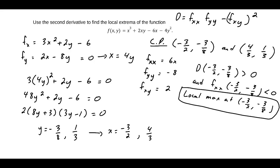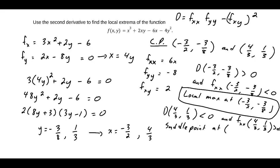And following similar steps, we find that d evaluated at the point 4 thirds comma 1 third is less than 0, and fxx evaluated at the point 4 over 3 comma 1 over 3 is greater than 0, which means there is a saddle point at the point 4 over 3 comma 1 over 3.